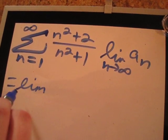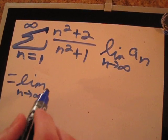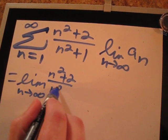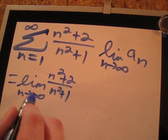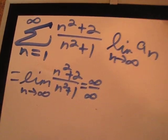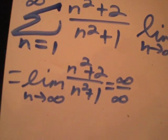So this is going to equal the limit as n approaches infinity of n squared plus 2 over n squared plus 1. Now when we plug in infinity into this, we get infinity over infinity, which means that L'Hopital's rule applies.